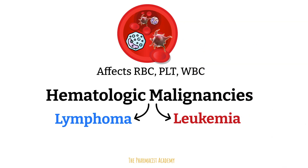The white blood cells, red blood cells, and platelets found in the blood are all mature. The immature ones are produced inside the bone marrow, which is a soft spongy tissue located inside the center of bones. There are two types of bone marrow: one containing hematopoietic stem cells, which gives rise to white blood cells, red blood cells, and platelets, and another type that contains mostly fat.